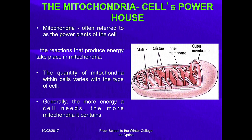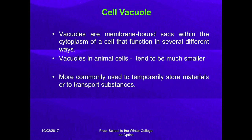Mitochondria, called the cell powerhouse, is often referred to as the power plant of the cell. The reactions that produce energy take place in mitochondria. Each cell can have different numbers of mitochondria — if more energy is needed, more mitochondria are present in that cell. Cell vacuoles are membrane-bound sacs within the cytoplasm that function in several different ways. Vacuoles in animal cells tend to be much smaller than in plant-like cells. They are more commonly used to temporarily store materials or transport substances.